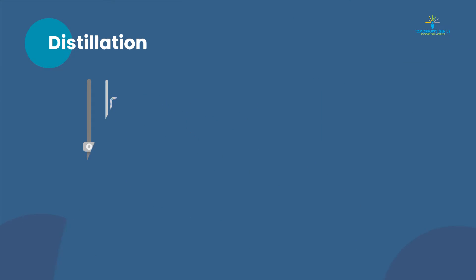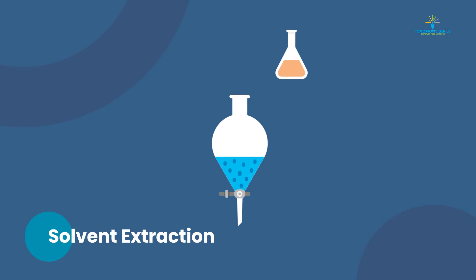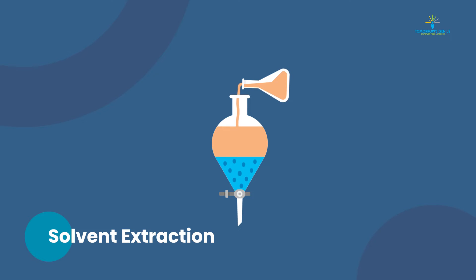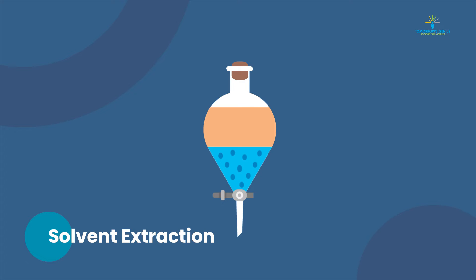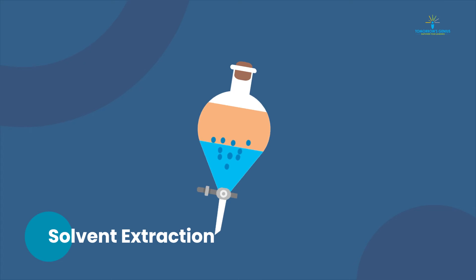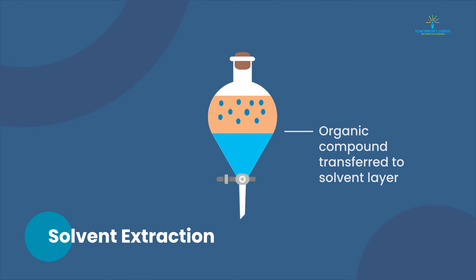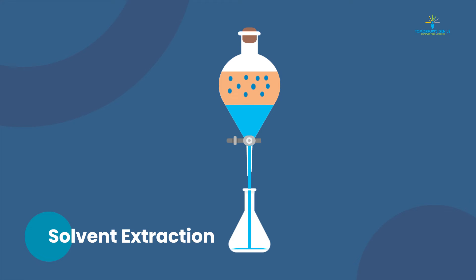Apart from distillation, solvent extraction is also one of the most broadly used techniques for the purification of organic compounds. Liquid-liquid extraction, also known as solvent extraction and partitioning, is a method to separate compounds based on their solubilities. As shown in the diagram, the blue layer is the water layer into which the reaction mixture is poured, and the yellowish layer is the organic solvent. When we shake the flask, separation depending upon their solubilities is obtained, and we collect the aqueous layer from the organic layer.